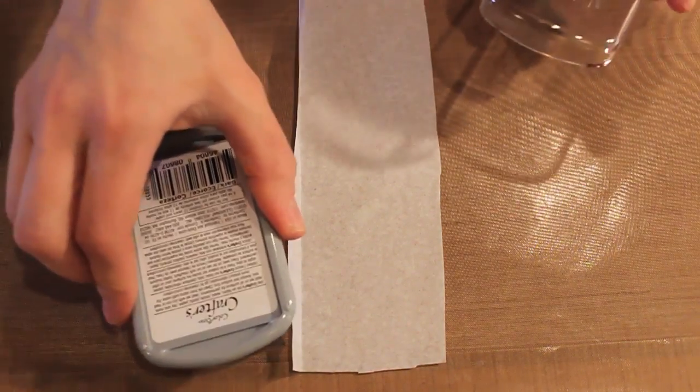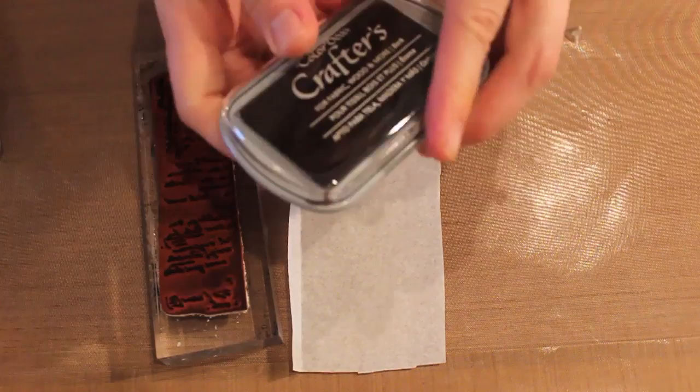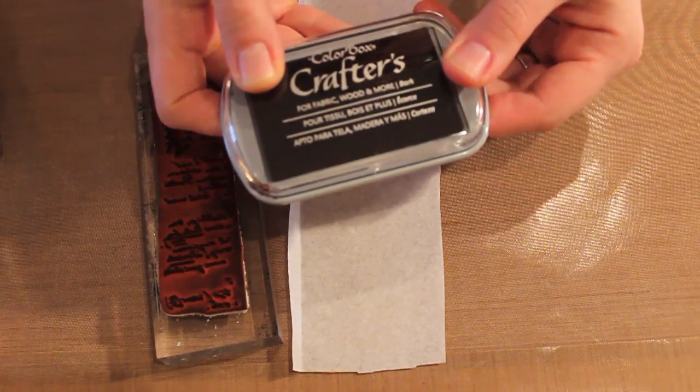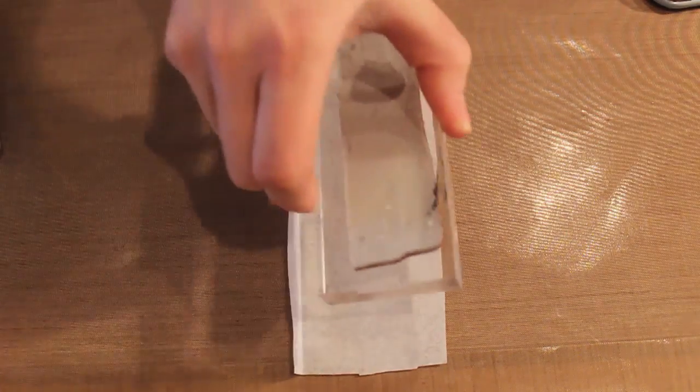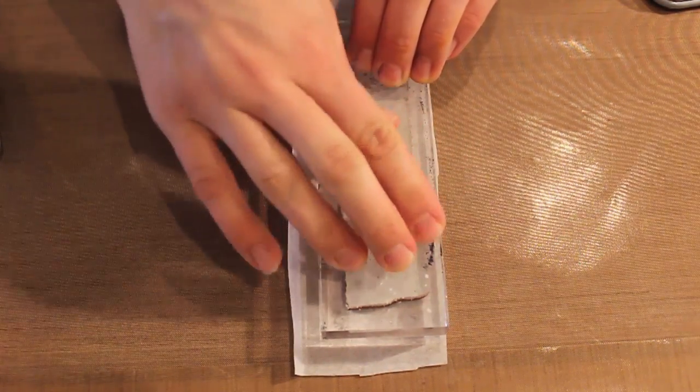And I'm inking it up with Clear Snaps Color Box. This is Bark, really nice dark brown. And then I'll just stamp this down.